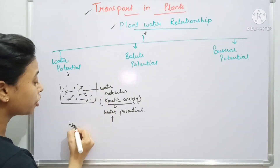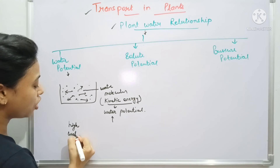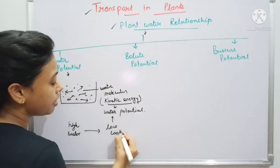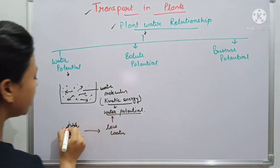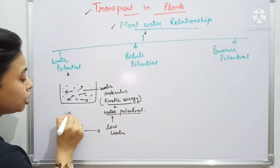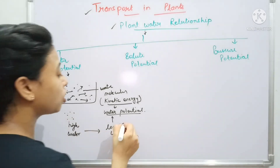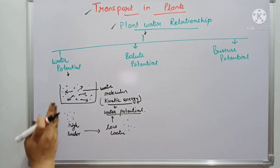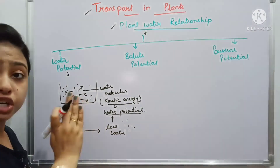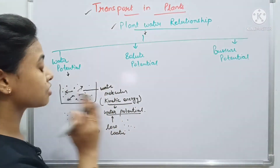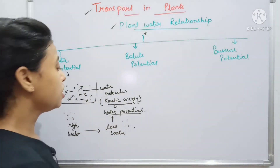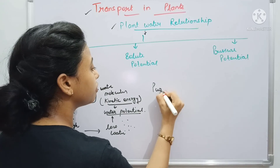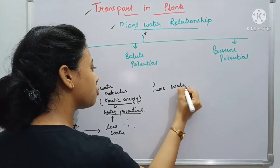Because of water potential, water moves from high water potential to low water potential. Where water molecules are high, water potential is high; where they are low, water potential is low. So water moves from high concentration to low concentration due to kinetic energy, which is called water potential.